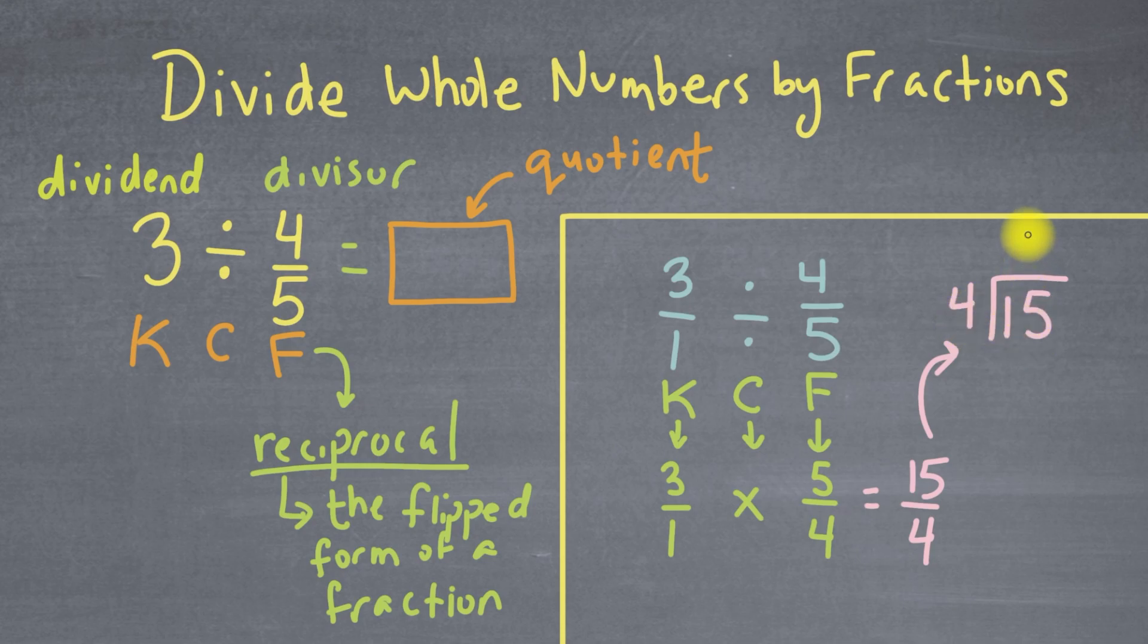4 goes into 15 three whole times. So now we've got 4 times 3, which is 12. And when I subtract that, I get 3. So I've got 4 going into 15 three whole times. The remainder is 3, so that's going to be my mixed number's numerator. And the denominator, or the divisor, is going to stay the same, and that's going to be 4th.